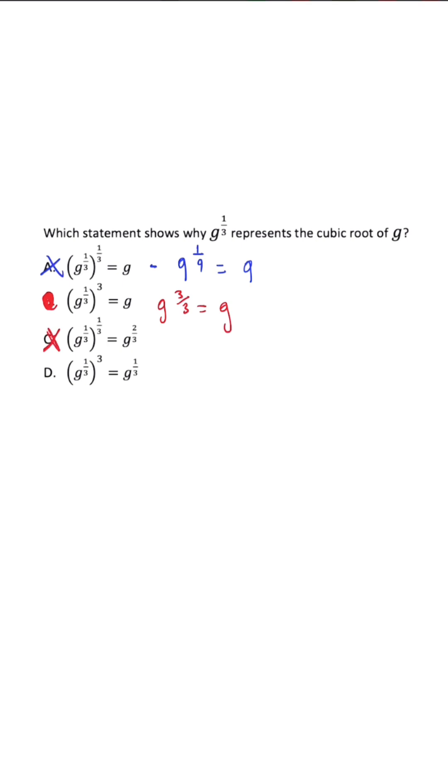When we look at answer choice D, the issue with this is that when you multiply, we have one over three to the third power. Once we put this over one and multiply numerator and denominator, we should get g to the three over three, which just simplifies to g to the first power.